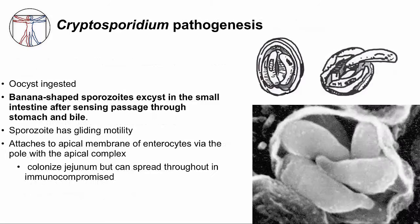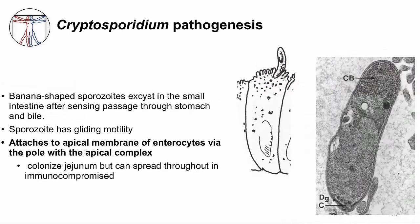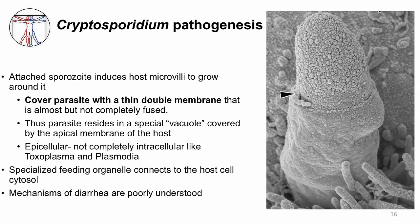Once we ingest the Cryptosporidium cyst, excystation occurs in the small intestine, triggered by sensing the passage through the stomach and bile. What hatches from the cyst are banana-shaped sporozoites, which have gliding motility very similar to their cousin Plasmodium. The sporozoites eventually attach to the apical membrane of the enterocyte using a unique apical complex structure seen in all Apicomplexa members. You can see the attachment in the cartoon drawing and the electron micrograph. The sporozoites colonize the jejunum but can spread throughout the gut in immune-compromised patients. When attached, the sporozoite uses its apical complex to secrete things into the enterocyte, triggering the host microvilli to crawl up and grow around the sporozoite, covering it with a thin double membrane — the arrow shows where the host apical membrane is halfway done covering the sporozoite.